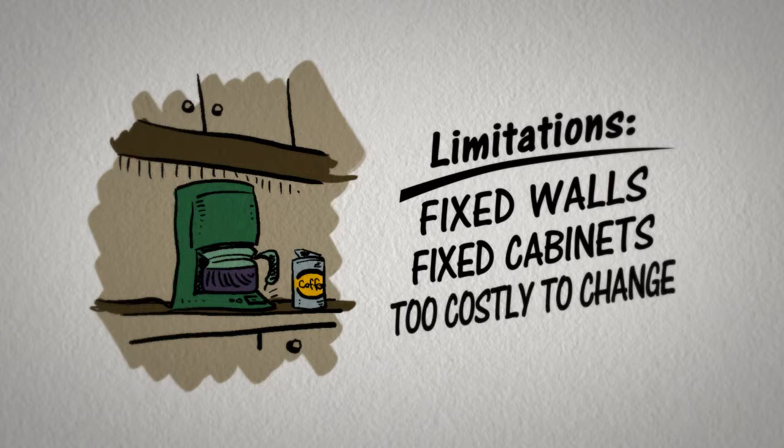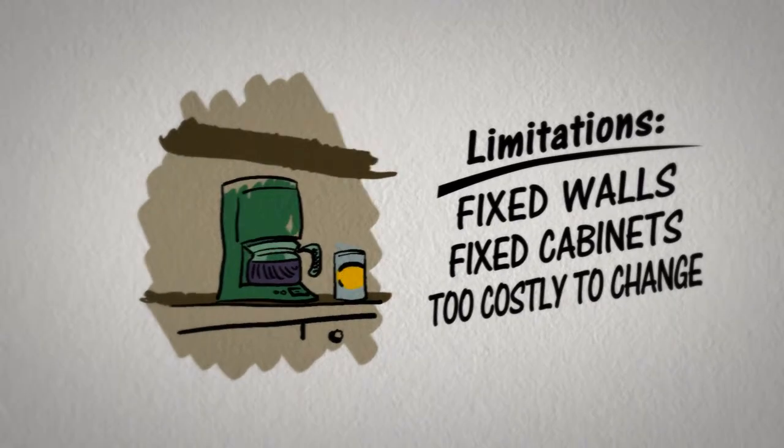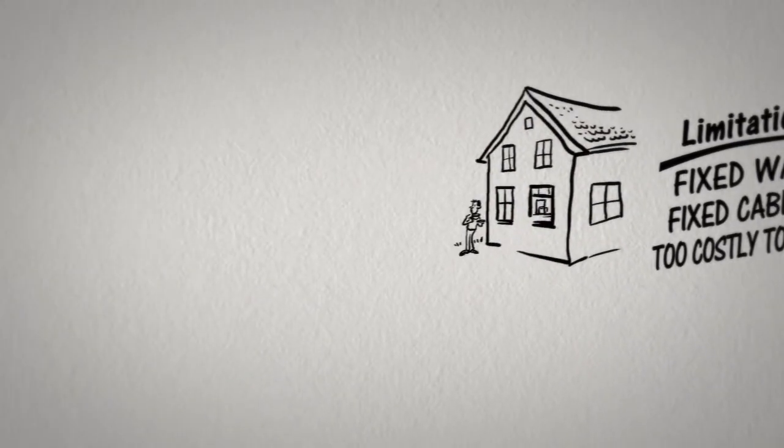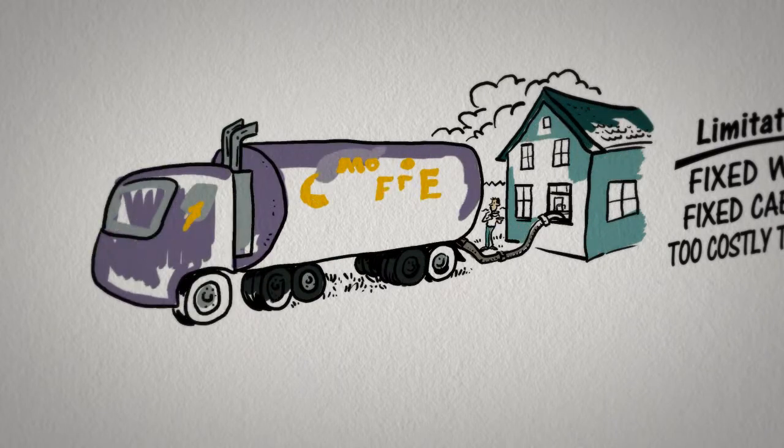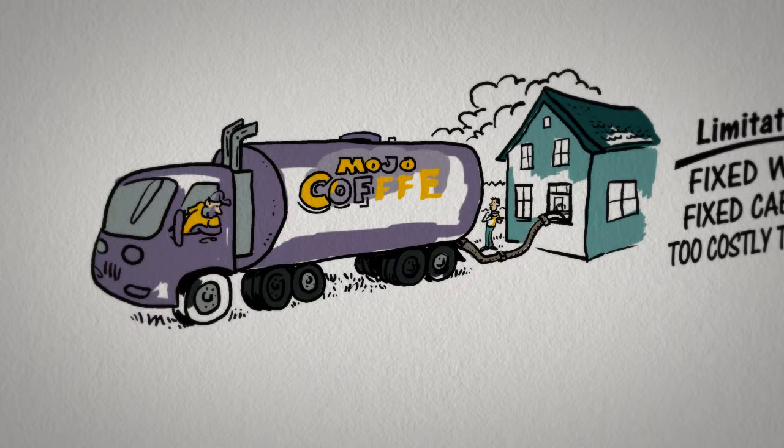But we cannot make cups of coffee by the millions in your kitchen. Structures of the system limit its capacity. There is only so much you can do to increase capacity. Beyond that, structure must be redesigned.